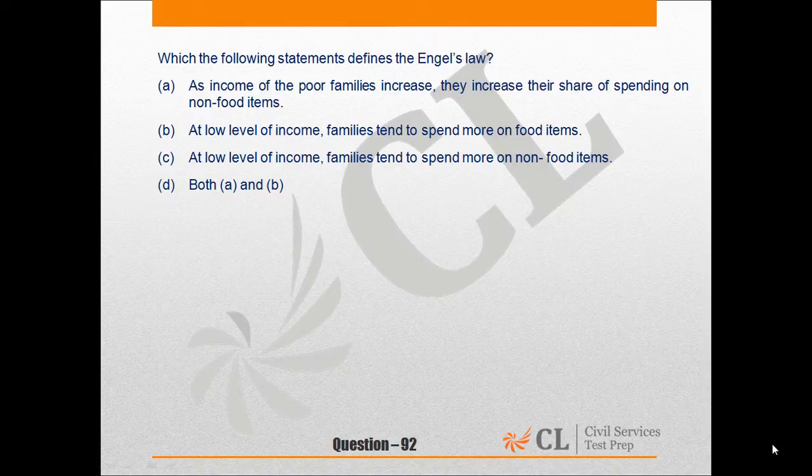So out of these four options, Option B correctly defines Engel's Law: at low level of income, families tend to spend more on food items. So the right answer is Option B.